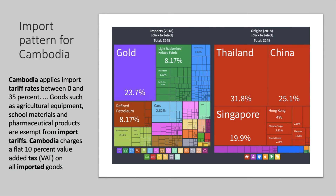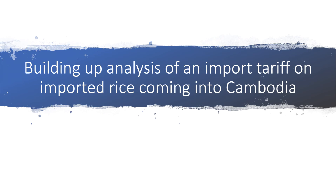These are the products that Cambodia imports. They do import some fabric, lots of things — flavoured water, rice and other things. You can see that imports are dominated by Thailand; nearly a third of their imports come from Thailand, from China and from Singapore. Cambodia applies an import tariff of between 0 and 35%. Typically farm output is imported at 35%. They don't tax things like agricultural equipment, school materials, or pharmaceutical products. Cambodia also charges a flat 10% value added tax on all imported goods, making it a good example of a country imposing import tariffs.